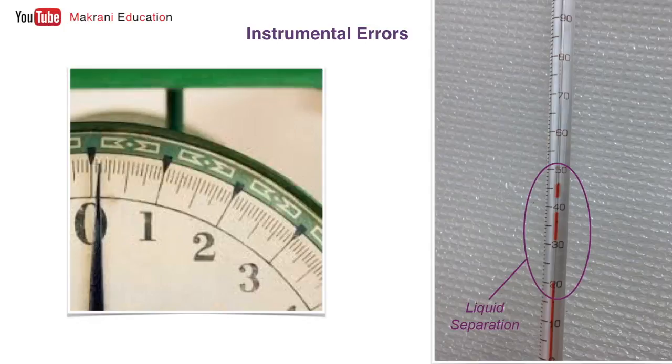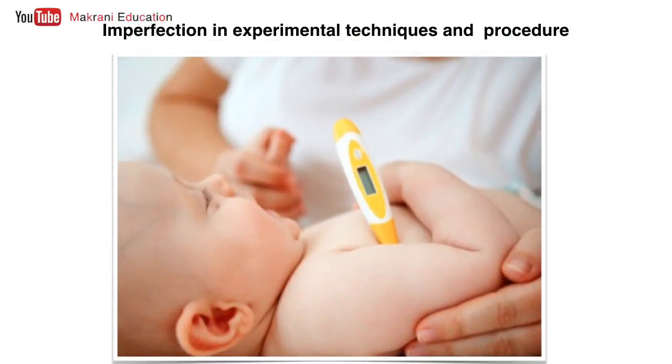Obviously this is one of the examples of instrumental error - this is an unfit instrument for measurements of temperature. Now second is errors due to imperfection in experimental techniques and procedure. Yes, readings should be taken while keeping certain criteria in mind and procedures in mind.